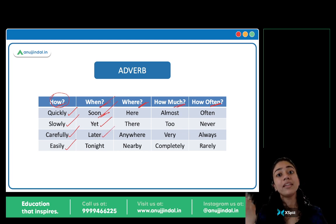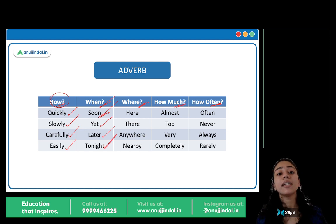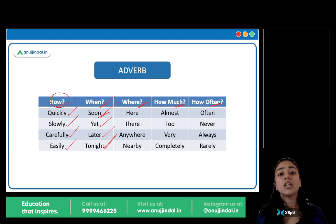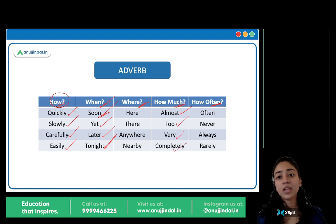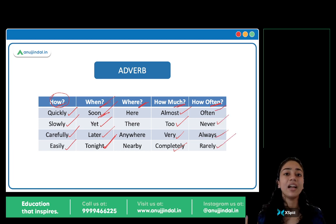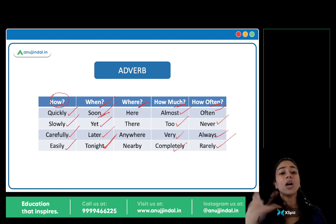Later — 'I'll talk to you later.' When? Later. Tonight — 'I'll be visiting him tonight.' When? Tonight. Where: there, anywhere, nowhere, nearby — adverbs hai. How much: almost, too, too much, very much, completely — sare adverbs hai. How often: often, never, always, rarely — yeh bhi adverb hai. In saab ka jo answer deta hai, woh word humara adverb hai.